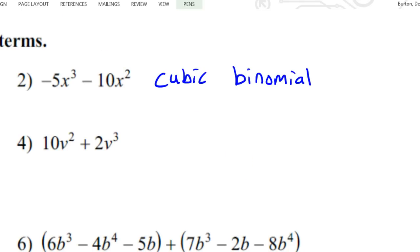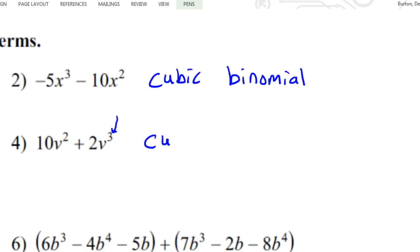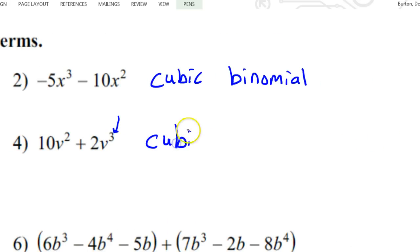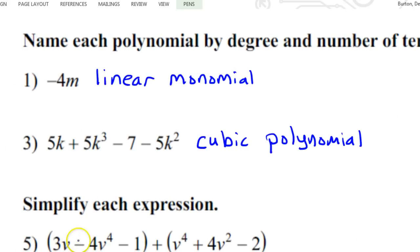Looking at this one right here, there are two terms, that makes it a binomial. The highest power is 3, so that makes it cubic. It's a lot of cubic. Whoever wrote this, it's a lot of cubic. So cubic binomial.